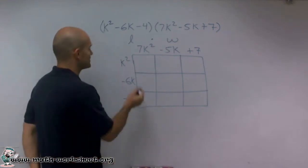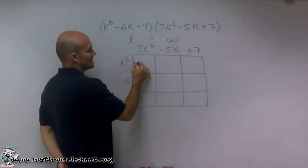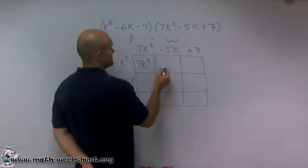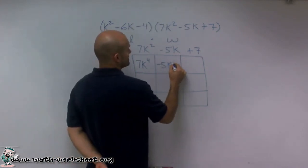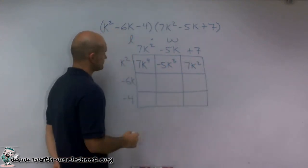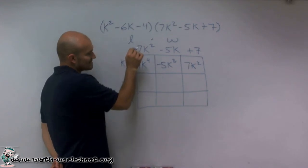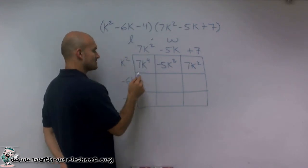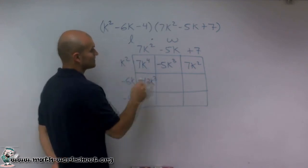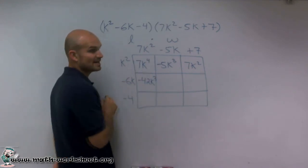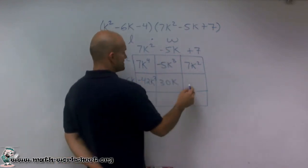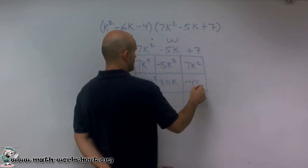Then I can combine them up. So k squared times 7k is 7k to the fourth. K squared times negative 5k is a negative 5k cubed. K squared times 7 is 7k squared. Negative 6k times 7k squared is a negative 42k cubed.